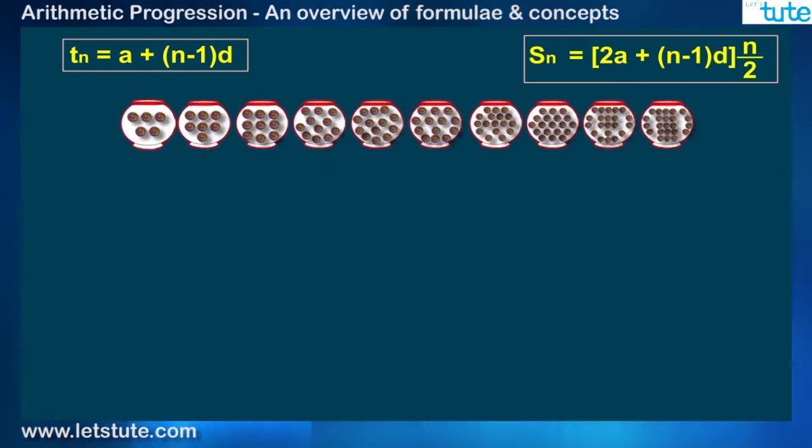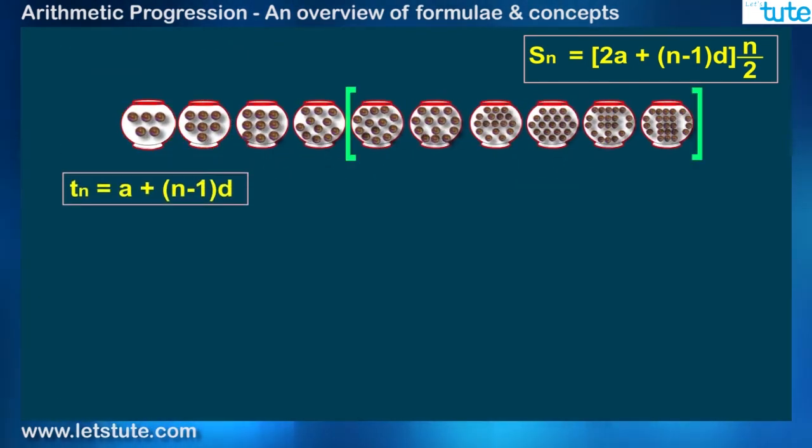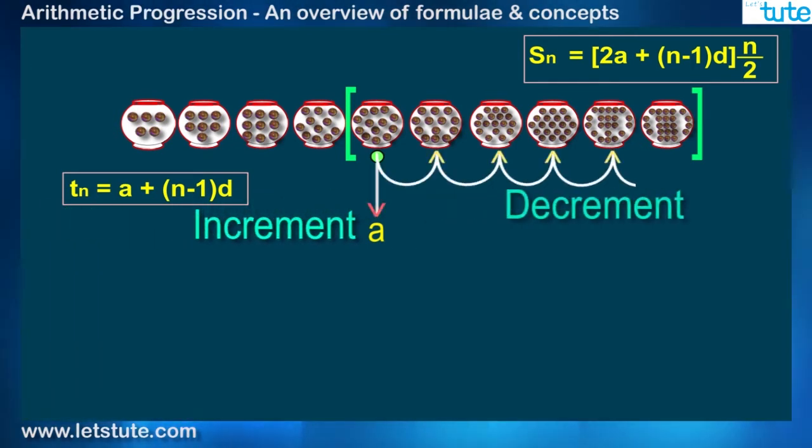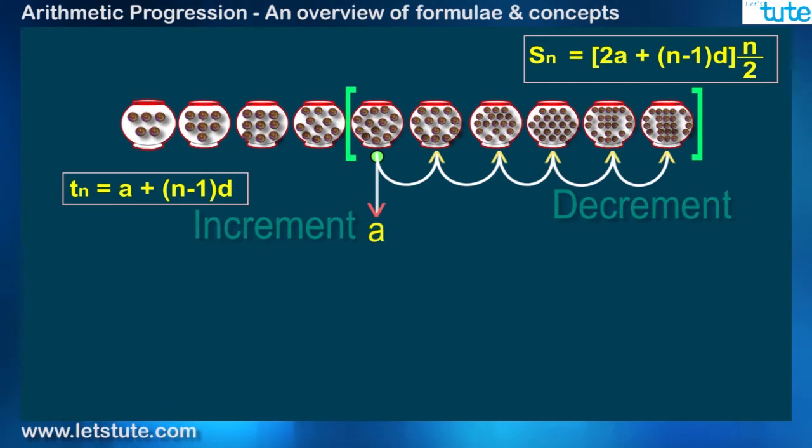We may select any range. Like if I select this range, then the very first pot in that range will automatically become A, that is the first term of AP. And the increment or the decrement in the next term is represented by D.